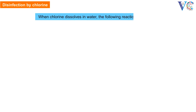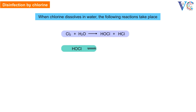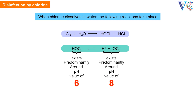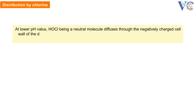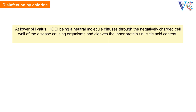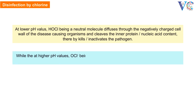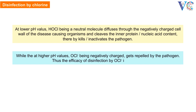Disinfection by chlorine. When chlorine dissolves in water, the following reactions take place. At lower pH values, HOCl, being a neutral molecule, diffuses through the negatively charged cell wall of the disease-causing organism and cleaves the inner protein or nucleic acid content, thereby killing or inactivating the pathogen. While at higher pH values, OCl⁻, being negatively charged, gets repelled by the negatively charged cell wall of the pathogen.